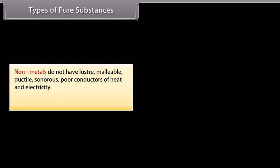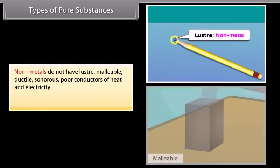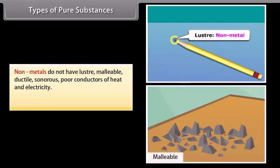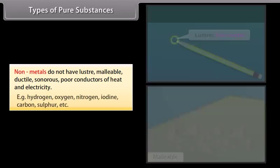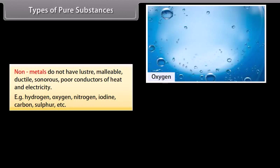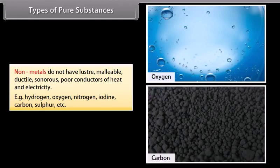Non-metals do not have luster, malleability, ductility, or are sonorous. They are poor conductors of heat and electricity. For example: hydrogen, oxygen, nitrogen, iodine, carbon, sulfur, etc.